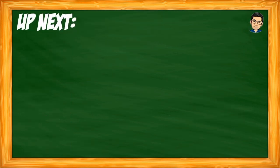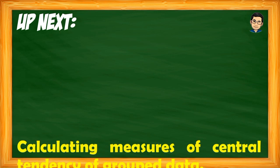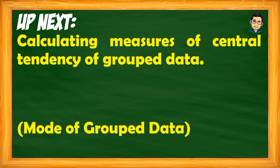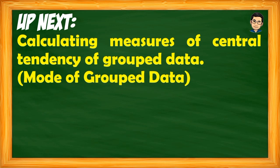For our last video lesson on measures of central tendency of grouped data, we will discuss the mode of grouped data. The mode is the most frequently occurring value in a set of data. That will be covered in the next video lesson. Thank you very much.